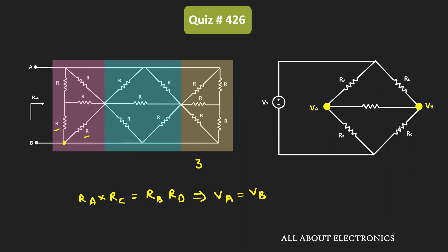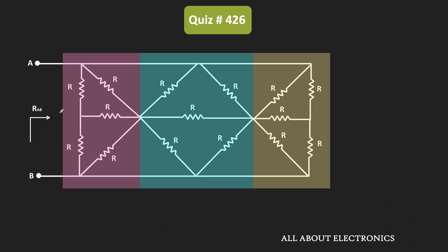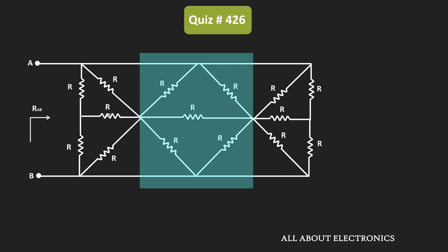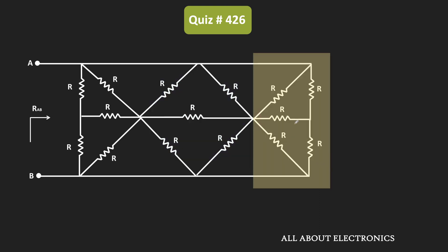In this case, the resistance of all the arms is equal to R, so we can say that all three Wheatstone bridges in the circuit are balanced bridges. For the first Wheatstone bridge, these two nodes are at the same potential, and therefore no current will flow through this resistor R. Likewise, for the second Wheatstone bridge, it is also a balanced bridge, so these two nodes will be at the same potential and no current will flow through this resistor R. And likewise, for the third Wheatstone bridge also, no current will flow through this resistor R.